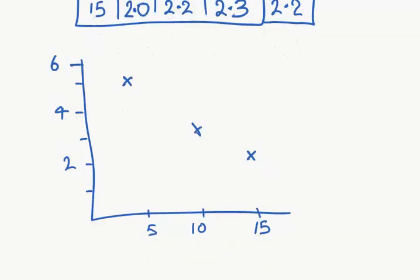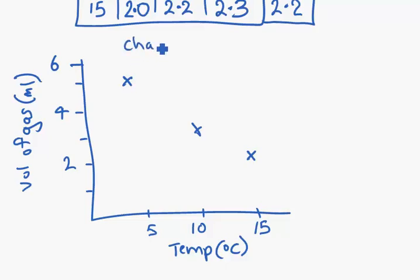There's a bit more we need to do to actually get good grades again. What is this? Temperature, degrees Celsius. Up the side, volume of gas in milliliters. We need a title. What we changed, what we measured, and in what.